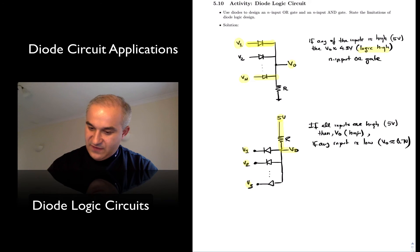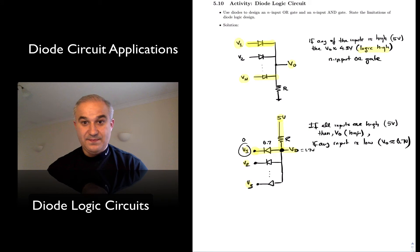If any of them is low, let's consider V1. Let's consider that over here we put 0V or something close to 0. The diode conducts, and therefore we're going to get 0.7V, or the output is going to be whatever you put at the input plus 0.7. Assuming that this is a logic low, like around 0V, you will get an output of 1.7V for any one of them. So all of them need to be high in order to have a high voltage.